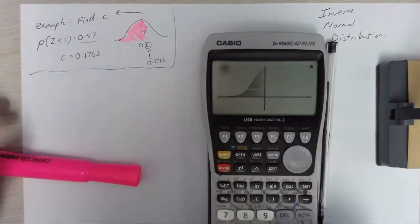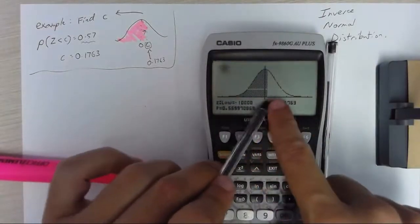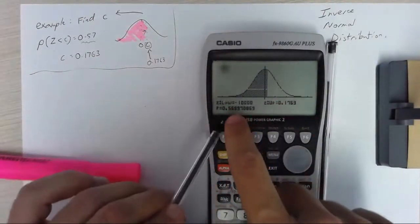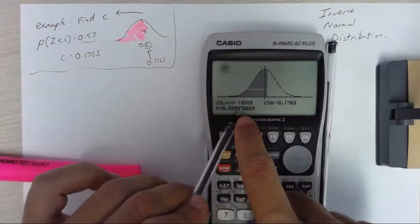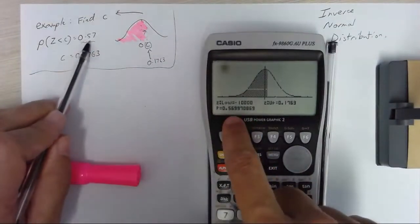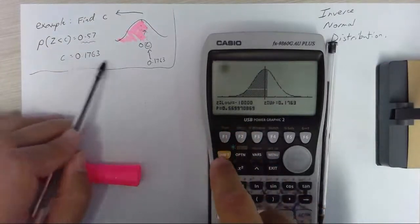And you can see it looks exactly like what I did there and the probability is 0.5699 which is close enough to 0.57. I just rounded that.